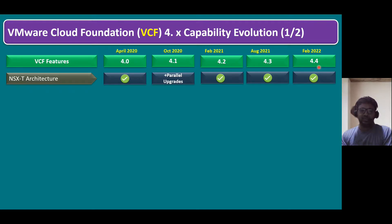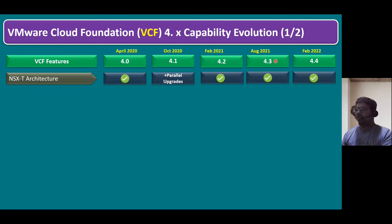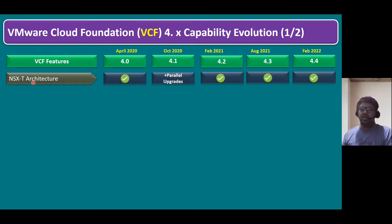So now let's quickly understand the main changes from 4.0 through 4.4. Previously we had NSX-V, NSX only for the vSphere platform, and later VMware introduced NSX-T — the Transformers architecture. This architecture is supported starting from the 4.0 edition.